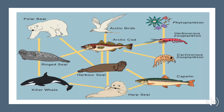Now can you think of a three-step food chain using the animals that you can find in this picture? If you say herbivorous zooplankton, Arctic cod, and ring seal, you are right. That is an example of a three-step food chain of animals in the Arctic. Now give another one. If you mention Arctic birds, Arctic cod, harbor seal, then you are right again.